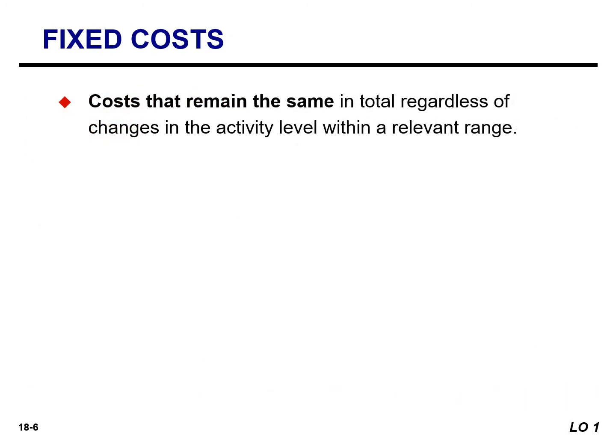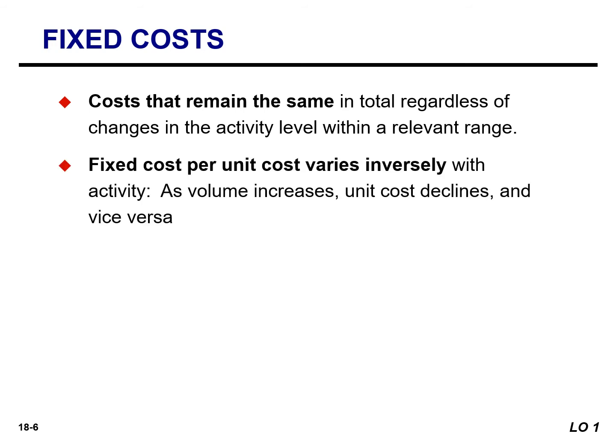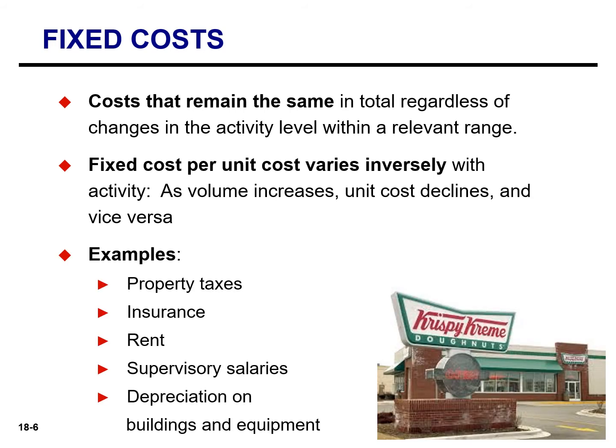Fixed costs are costs that remain the same in total, regardless of changes in the activity level. Fixed costs per unit will vary inversely with activity — as volume increases, our unit costs will decline. Examples of fixed costs include property tax, insurance, rent, supervisory salaries, as well as depreciation on our building and equipment.